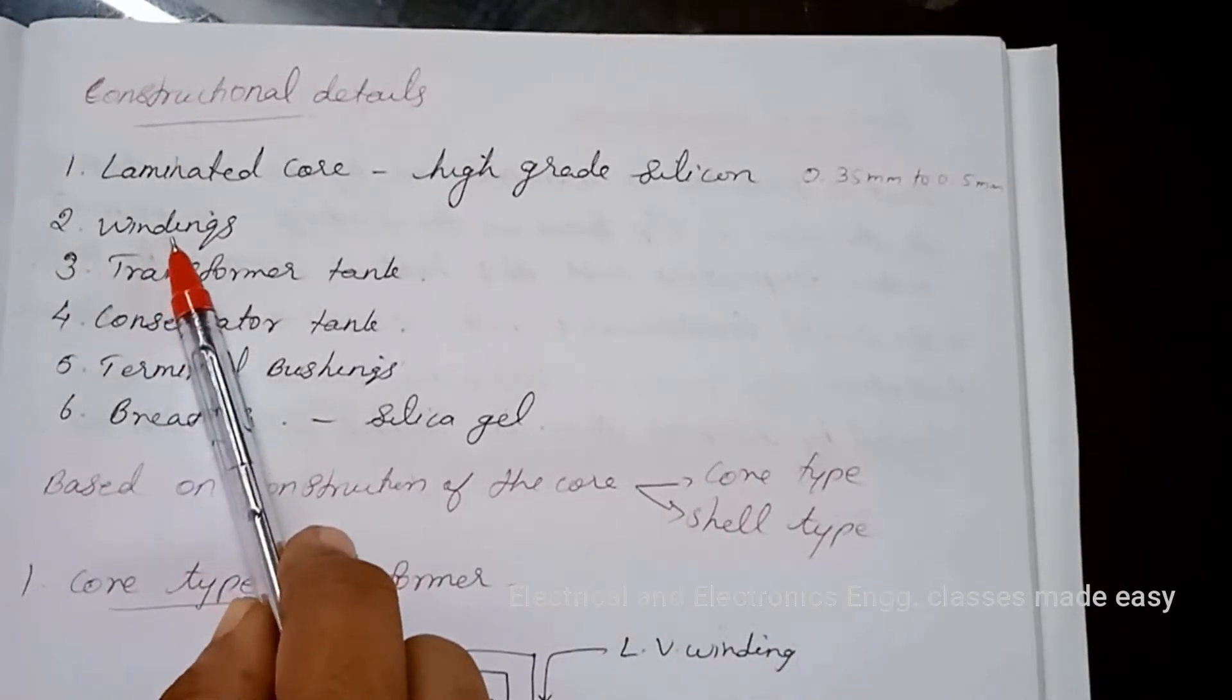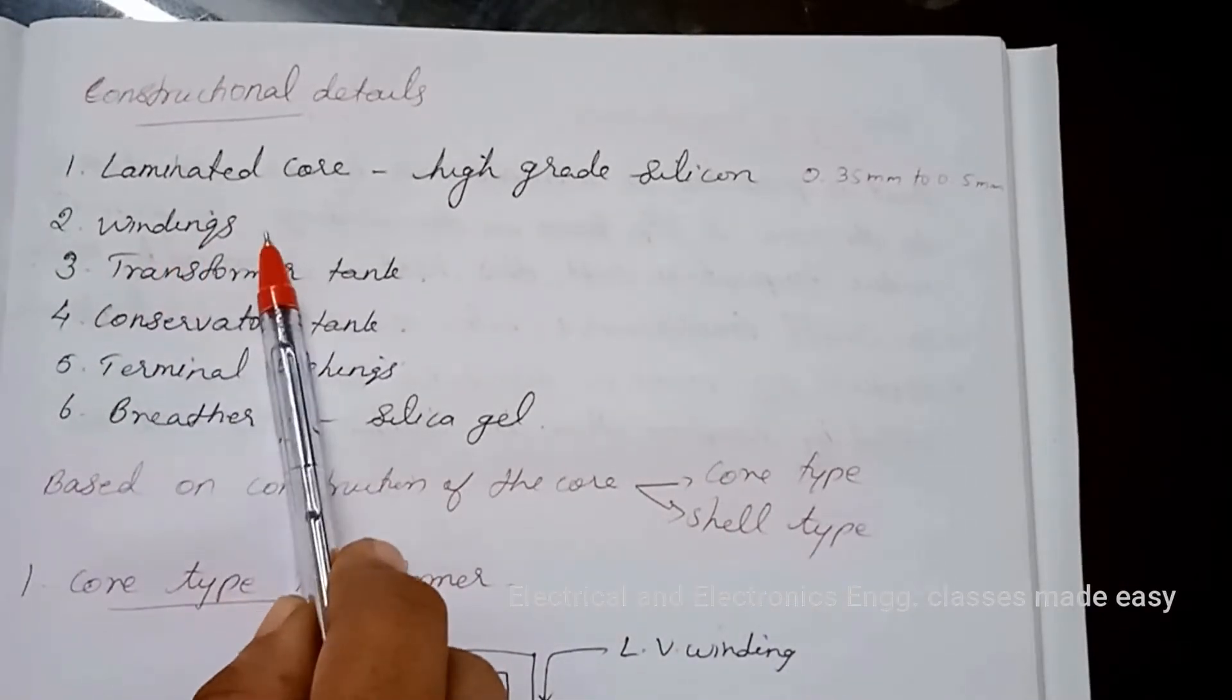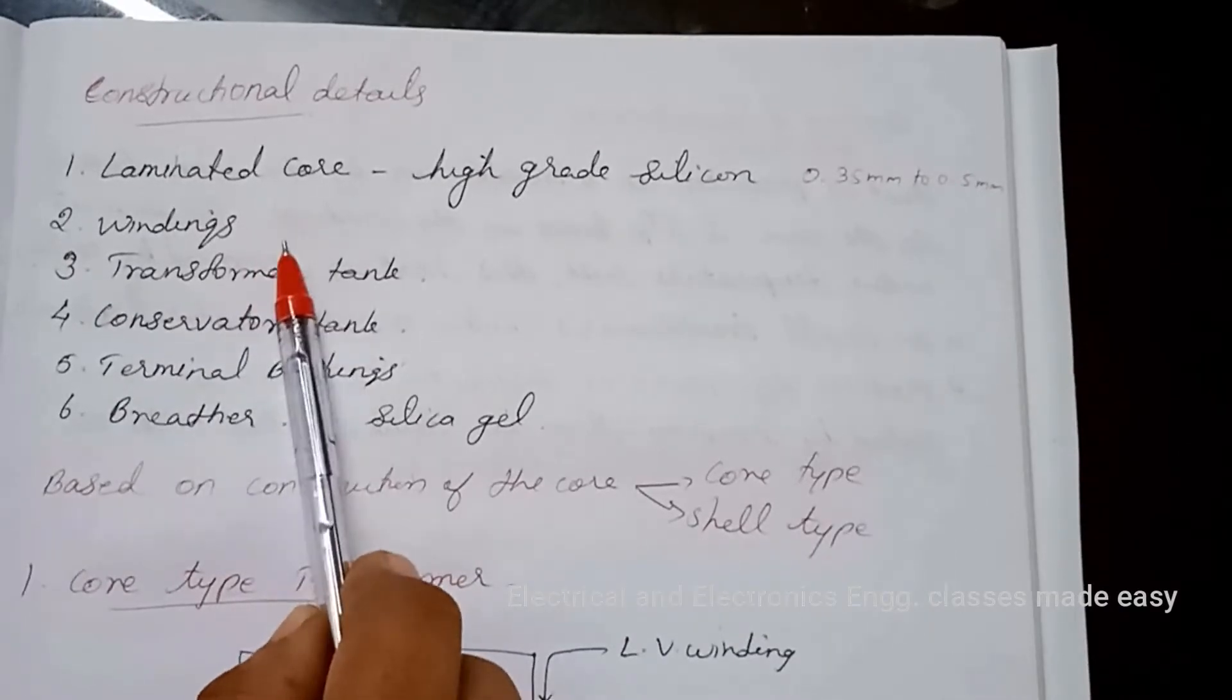Next, windings. The primary and secondary windings are of super-enamelled copper wire. These windings are insulated from each other.